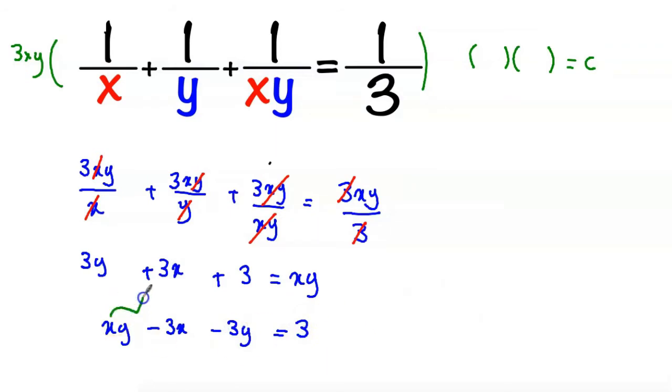Now let's look at these two terms. We can take x as a common factor, and the equation becomes x multiplied by y minus 3 minus 3y equal to 3.